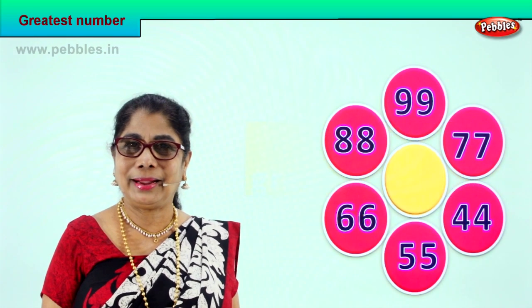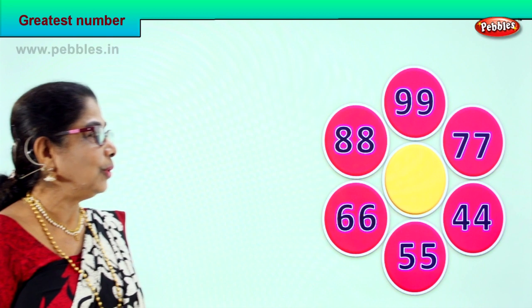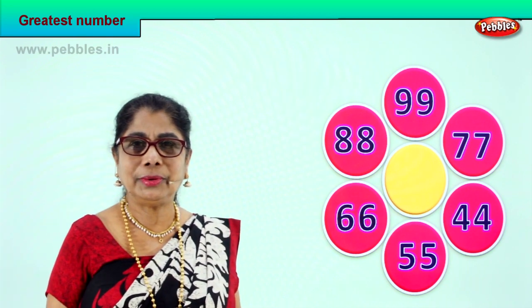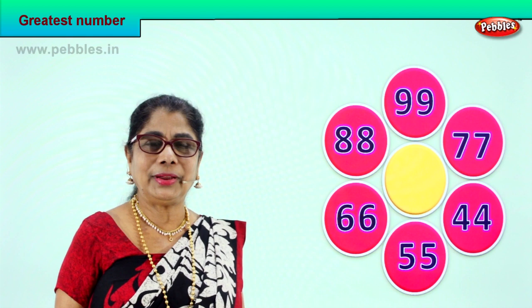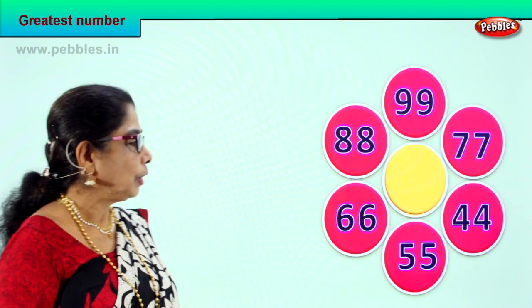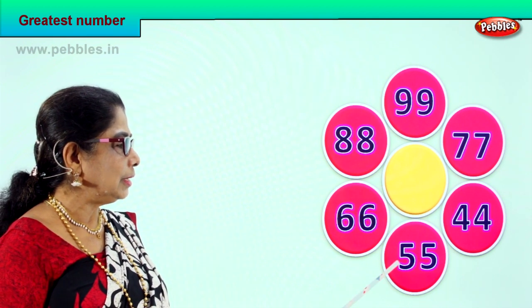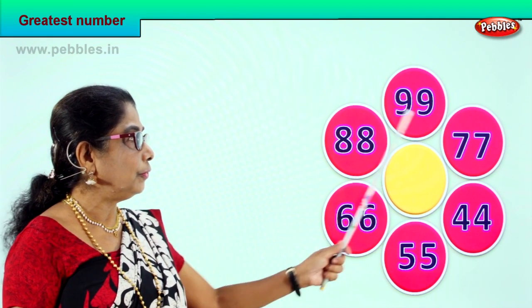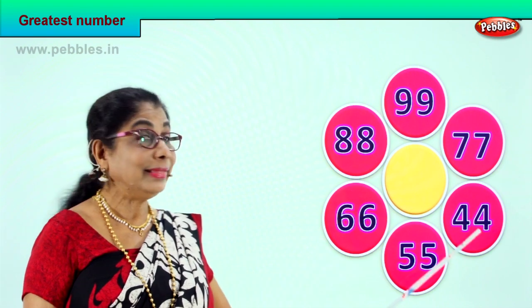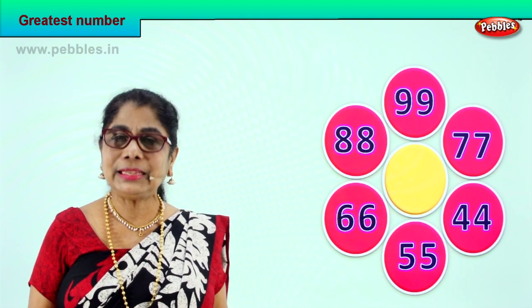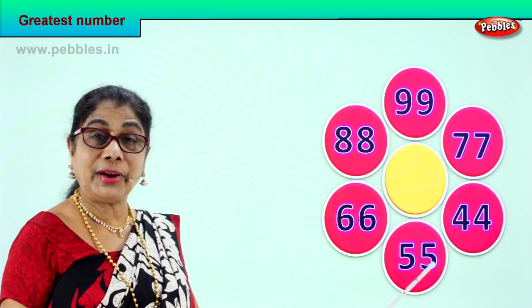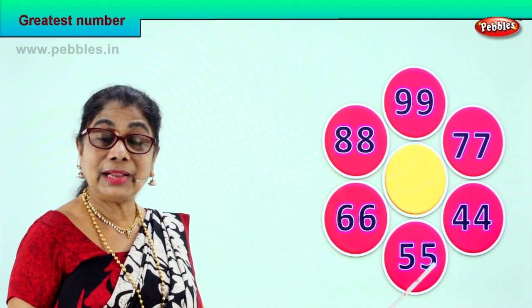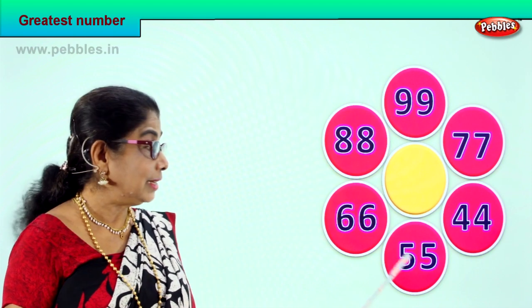Shall we look at our first exercise? Here we are. Look at this beautiful picture — a lovely flower. You have lots of numbers here: 1, 2, 3, 4, 5 — there are 6 sets of numbers. Let's go one by one and see. 55 — how many tens? 5 tens.